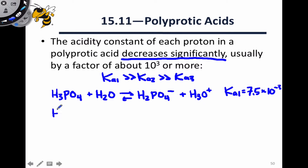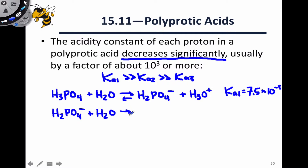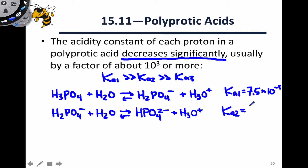The next deprotonation involves the conjugate base of the first deprotonation — the product of the first step — reacting with water. This is again an equilibrium process, producing the conjugate base of the acid on the left-hand side and H3O⁺ again. The Ka value here, Ka2, is much, much smaller than Ka1. It turns out to be 6.2 × 10⁻⁸, so we've gone from 10⁻³ to 10⁻⁸ — quite a big difference.